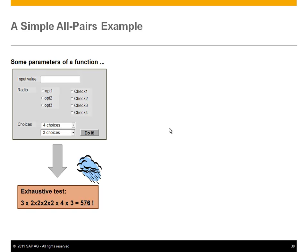If you think about how to test this thing, you see all the parameters. The input value is what is computed; the options are what we really need to model. We have a radio group with three values, four check boxes with binary values, a four-choice combo box and a three-choice combo box. This gives a total of 576 test cases — already way beyond what you can afford. Exhaustive testing is impossible.